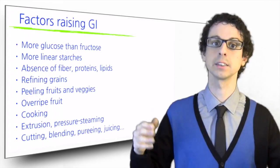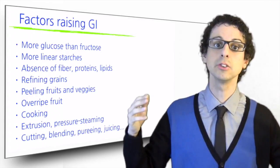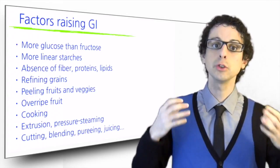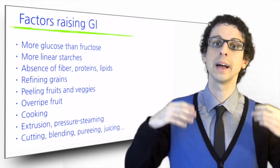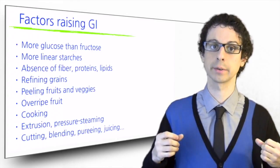If you turn your bowl of lentils into a lentil puree, its GI will be higher. If you juice a carrot, carrot juice will have a much higher GI than the whole carrot, and so on.